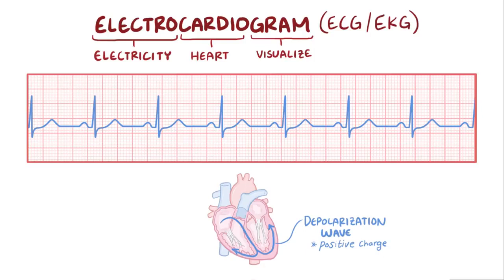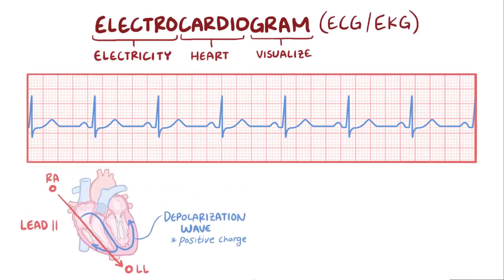And the way it looks depends on the set of electrodes you're using. This particular set of electrodes is called lead 2, for example, with one electrode on the right arm and the other on the left leg. So essentially when the wave's moving toward the left leg electrode, you get a positive deflection, like this big positive deflection corresponding to the wave moving down into the left and right ventricles.